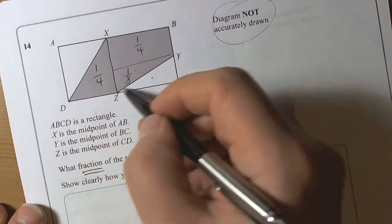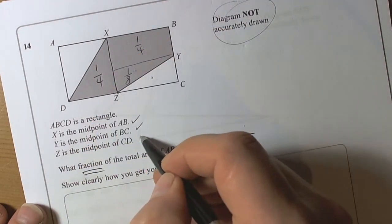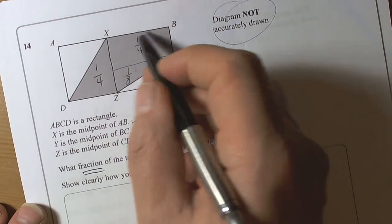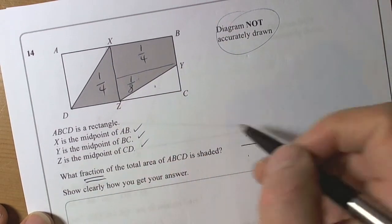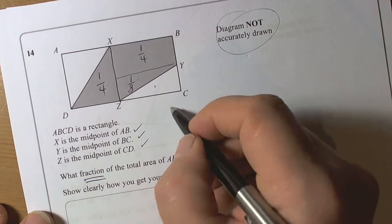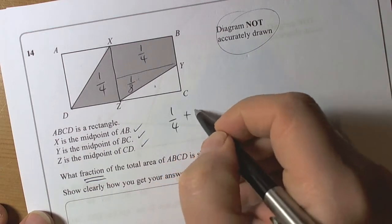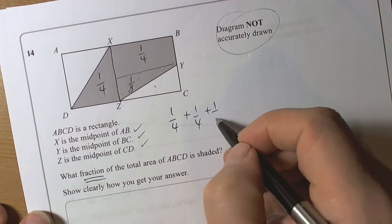So basically by looking at the information and going through and using it to break the shape up into parts, we can see that the shaded part is made of a quarter of the rectangle, plus another quarter of the rectangle, plus an eighth of the rectangle.